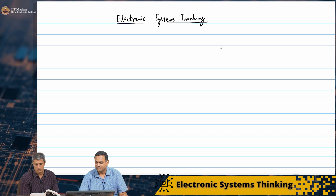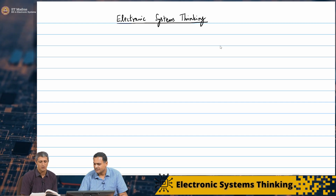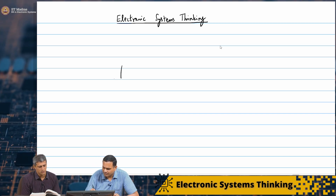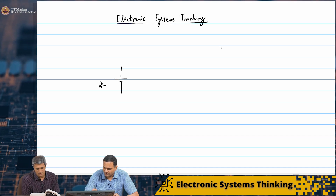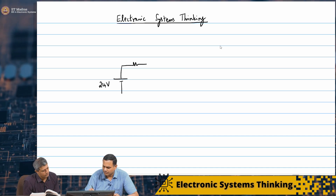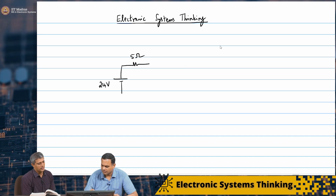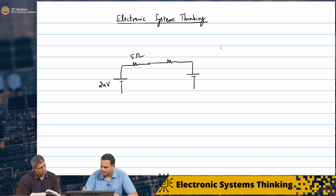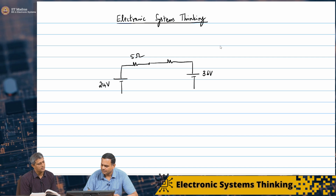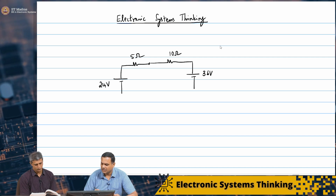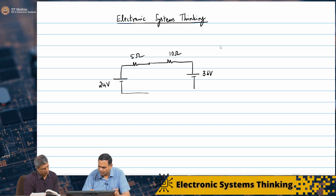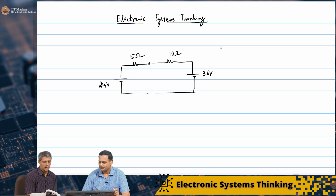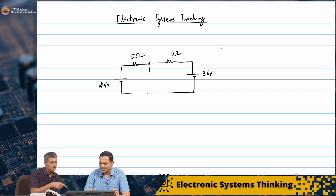So let me give you the mixer problem, right? You had a voltage source — a 24 volt DC source — and a series resistance of 5 ohms. On the other side you have a 36 volt source with another resistor. So this was my mixer. 36 volts and series resistance is 10 ohms. Now, can I close the loop? Yeah, you can close the loop. And in the earlier mixer problem, if you remember, we had a third source.